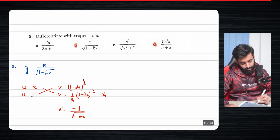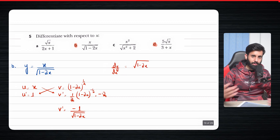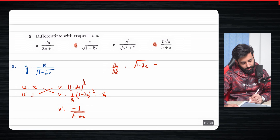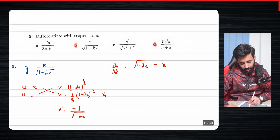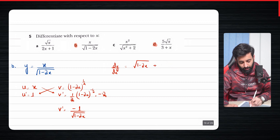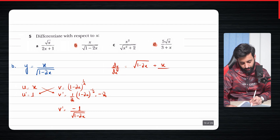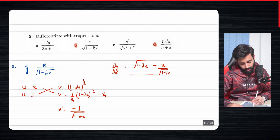Applying the quotient rule, v u prime minus u v prime over v squared: v u prime is the square root of 1 minus 2x. Then minus u v prime — so minus x multiplied by minus 1, which gives plus x over the square root of 1 minus 2x. For v squared, squaring something with a square root means the square roots cancel, so v squared equals 1 minus 2x.